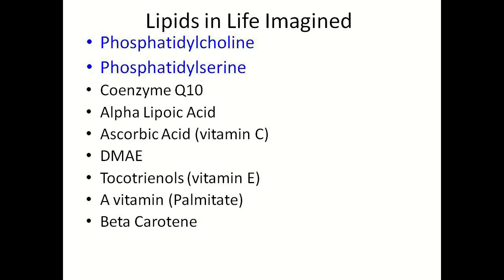When you look at the formulation of Life Imagined, there are several different fats in the formula: beta-carotene, which is a form of vitamin A, vitamin A itself, and vitamin E which has eight different types called tocotrienols and tocopherols — these are all fats. When they're absorbed with the phosphatidylcholine and phosphatidylserine, they are actively absorbed. So too with DMAE, which is a precursor to acetylcholine, alpha-lipoic acid, and coenzyme Q10. Absorption of all of these becomes remarkably better in the presence of phosphatidylcholine and phosphatidylserine. Additionally, vitamin C, even though it's a water-soluble vitamin, actually attaches to the phosphatidylcholine end and regenerates all of these other fats in the formula that could go rancid. So it's a synergistic formulation.